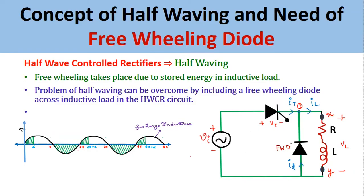In the diagram, the freewheeling diode is reverse connected across the RL load. Due to this freewheeling diode, the SCR goes into the off condition during the negative half cycle of the AC input voltage, because the freewheeling diode takes the stored energy of the inductive load during the negative half cycle and remains on during that period. Therefore, the load voltage will never become negative in the negative half cycle of the AC input voltage.